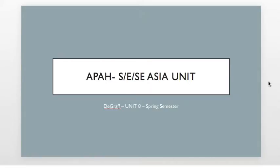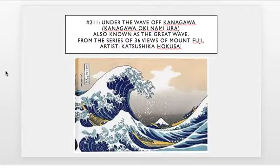Alright, so today I'm going to be focusing on the Southeastern and Southeastern Asian Unit, Unit 8, and I'm going to be focusing on number 211, which is The Great Wave by the artist Hokusai, part of the series of the 36 Views of Mount Fuji.